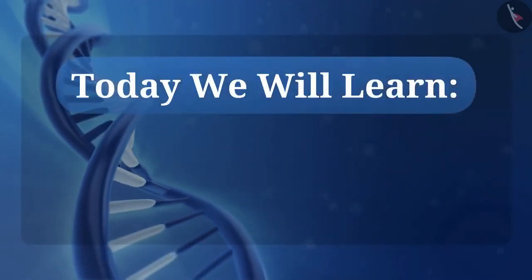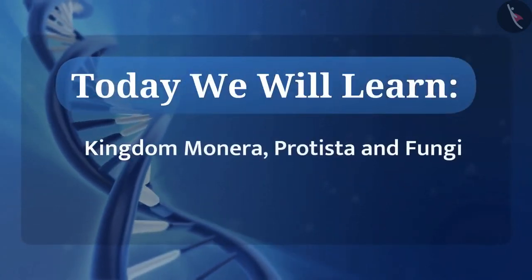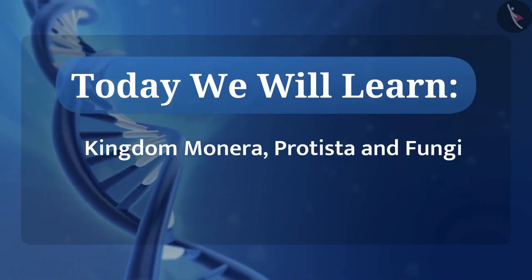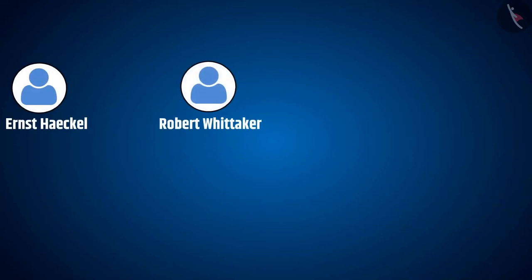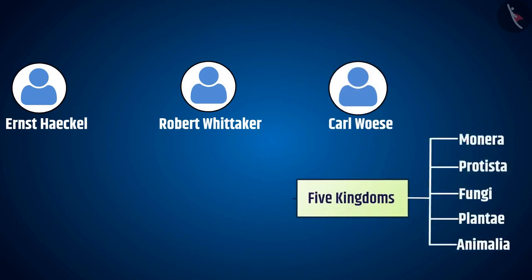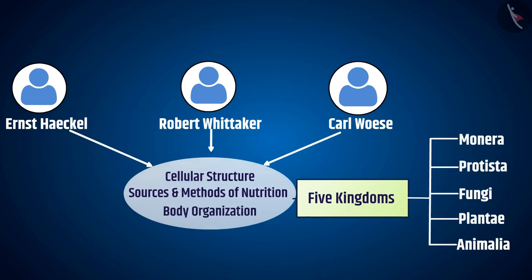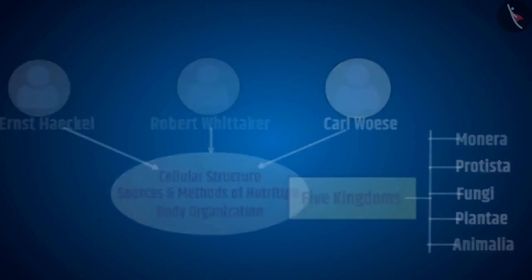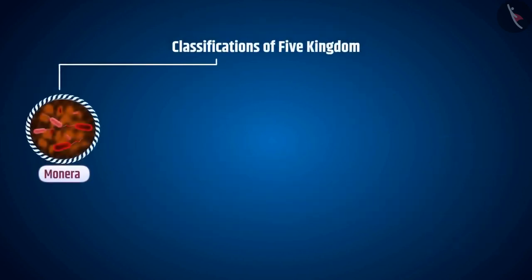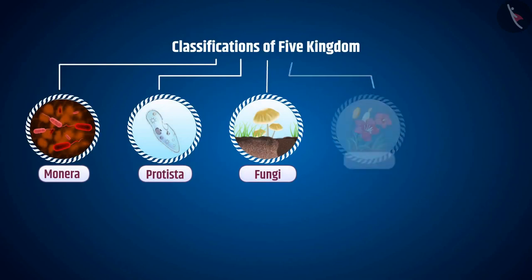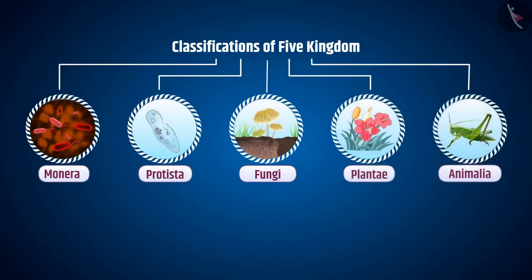Today we will learn about Kingdom Monera, Protista and Fungi. Scientists Ernest Haeckel, Robert Whittaker and Carl Woese divided all living organisms into five kingdoms based on cellular structure, sources and methods of nutrition and body organization. These are the five kingdoms: Monera, Protista, Fungi, Plantae and Animalia.